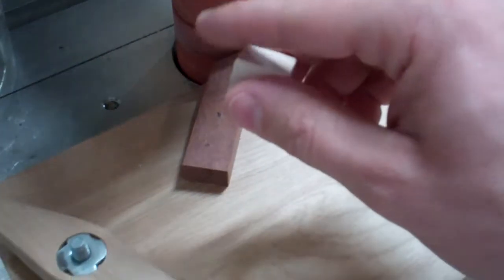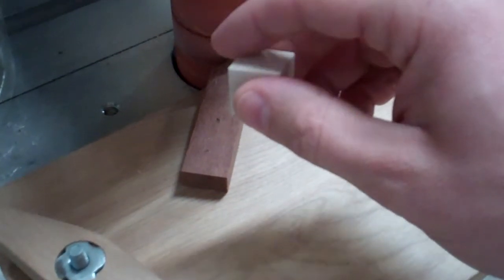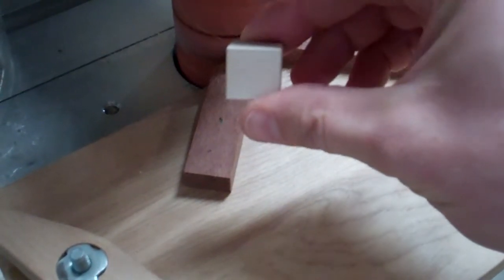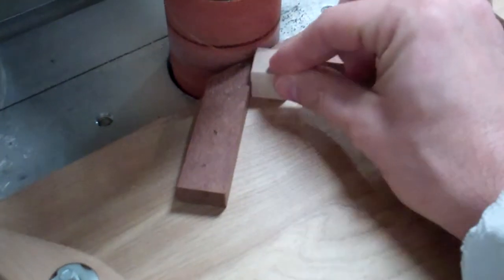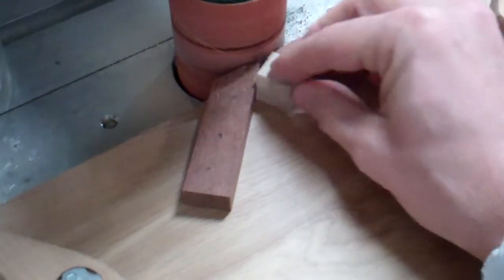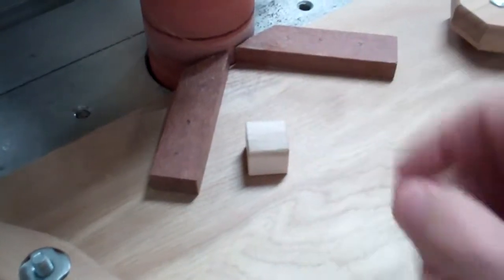So I do all eight edges that adjoin end grain first, and then I do the last four edge grain to edge grain last. Hope this helps.